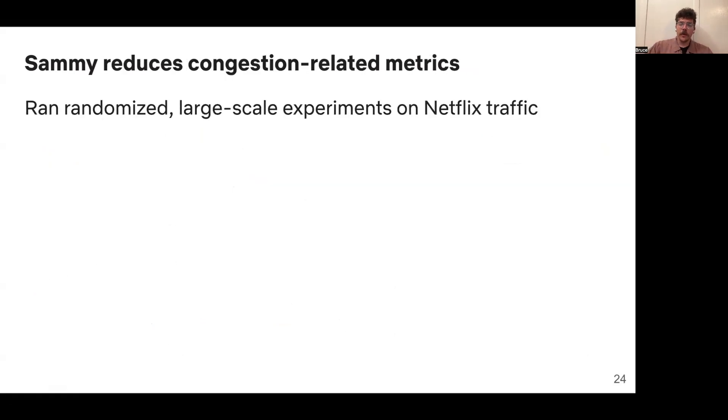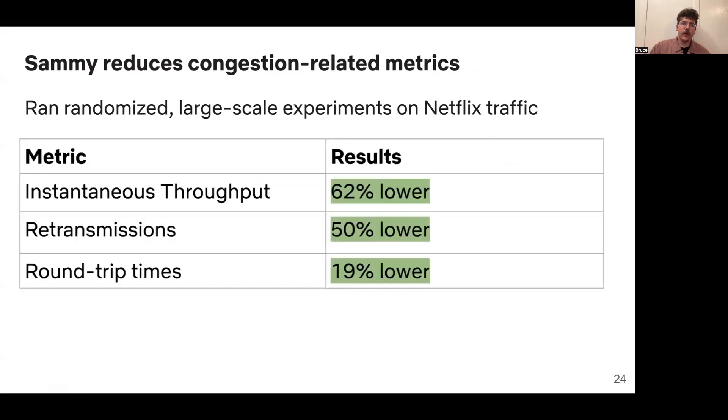Let me tell you about some large-scale experiments we ran using SAMI at Netflix on production traffic. We saw reductions in many congestion-related metrics. Instantaneous throughput was reduced by about 60%. Retransmits were reduced by about 50%. Round trip times were reduced by 20%. And SAMI was able to do all of this without reducing QoE. And in fact, QoE slightly improved, and you can see the paper for details about why that is.